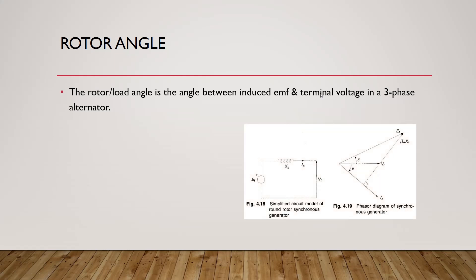Looking at the phasor diagram: we have our generator which generates induced EMF E, a reactance representing the equivalent reactance from our generator to the grid connection, and V terminal representing the voltage of our grid. We find that V terminal and E, the induced EMF, have the angle delta between them. Assuming V terminal has an angle of zero as our reference, we have a current lagging by angle theta, so the induced EMF E equals I multiplied by jXs plus V terminal, from KVL.